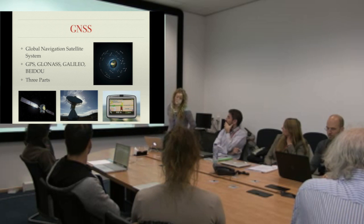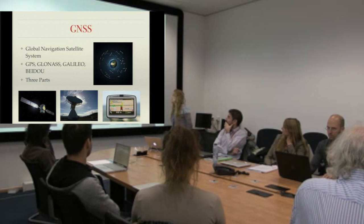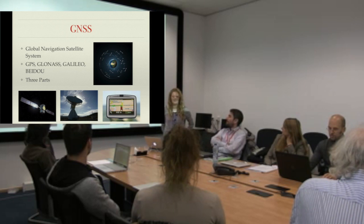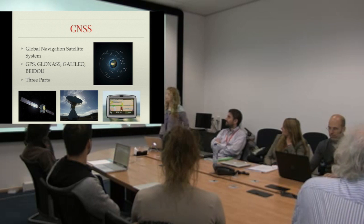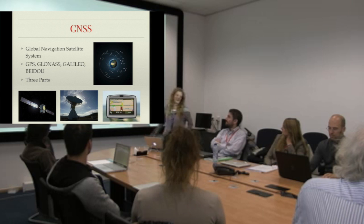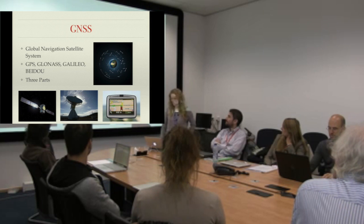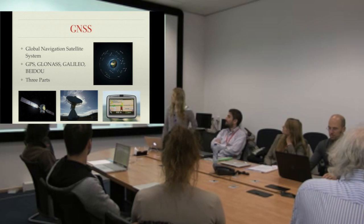The ground stations receive the clock time signals running on board the satellites, and from this they can figure out where the satellites are. They send this information back to the satellites to let them know where they are, and then the satellites can send that information to the GPS or GNSS sat-nav user, who can use it to figure out where they are.